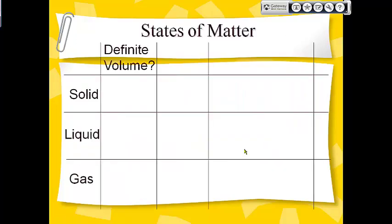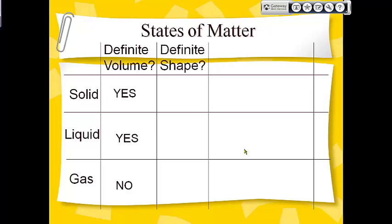Just to recap: which of these have a definite volume? Solids have a definite volume — they don't change how much space they take up. Liquids also have a definite volume — they don't change how much space they take up. Gases do not have a definite volume; they do change the amount of space they take up and spread out as far as they possibly can.